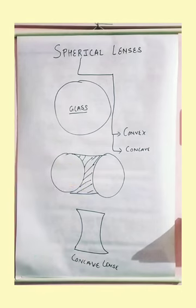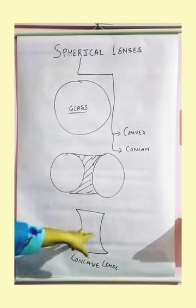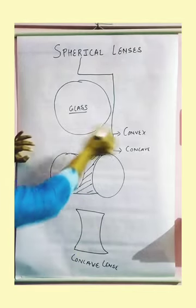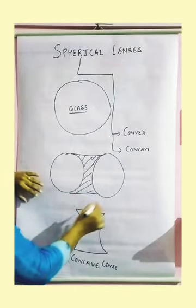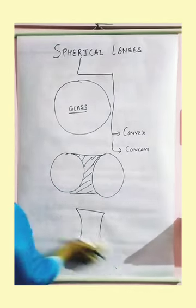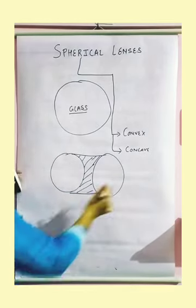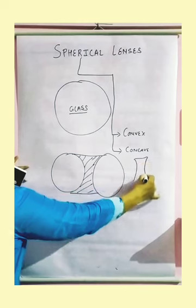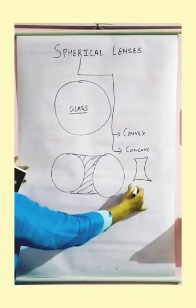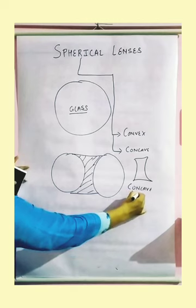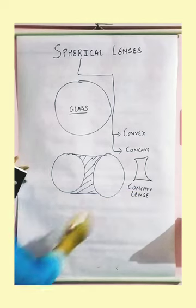When we combine two spherical bodies this way, we got a shape and that we called a concave lens. Now, again we have to make a convex also. So when we are going to make, I am going to make the second one for you. This shape is called my concave, concave lens.